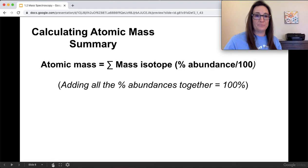Here's a summary of that formula using the summation sign. You can get the atomic mass by summing up all the isotopes' masses times their abundance divided by 100, and all of those abundances should add up to 100.